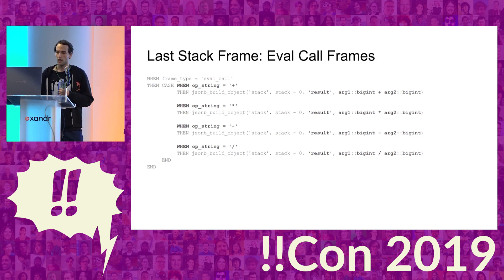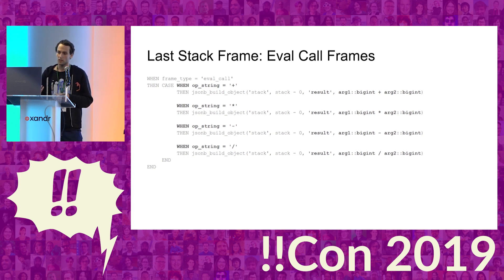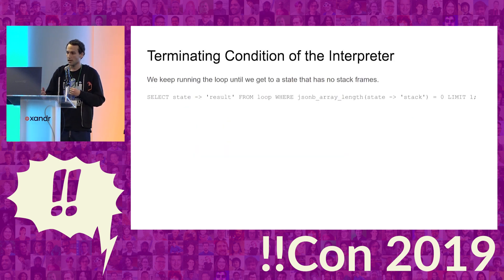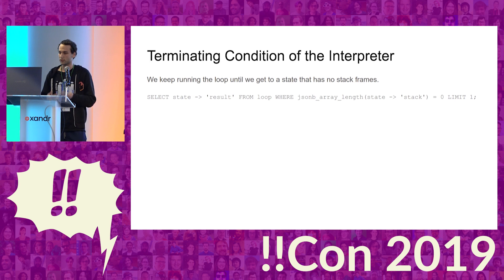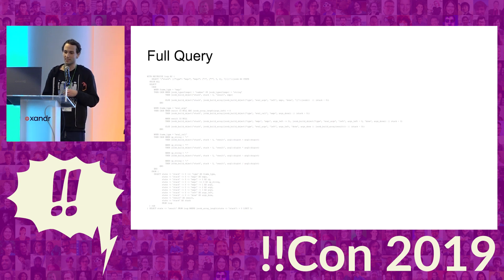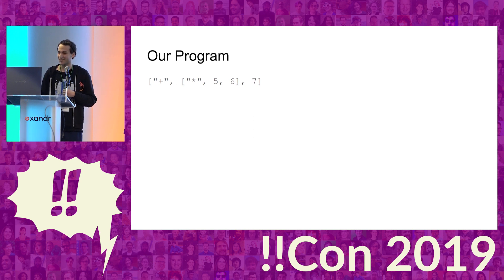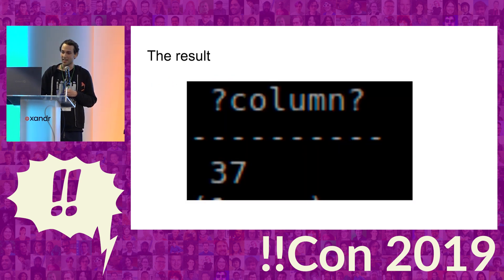The last thing to handle is the actual call evaluation. We look at the operator and apply it to the arguments — if the operator is plus, we sum the two arguments, and similarly for other operators. We terminate the interpreter once the stack is empty. And so we get a full query that looks something like this, with our little program at the top, and if you run that query, you get 37. So math does indeed work.